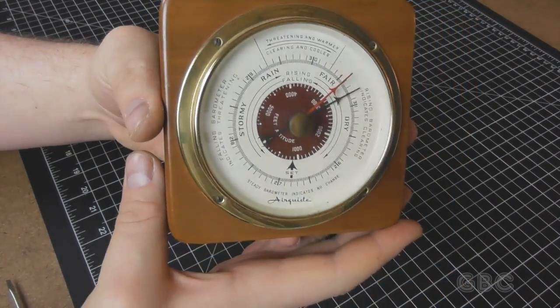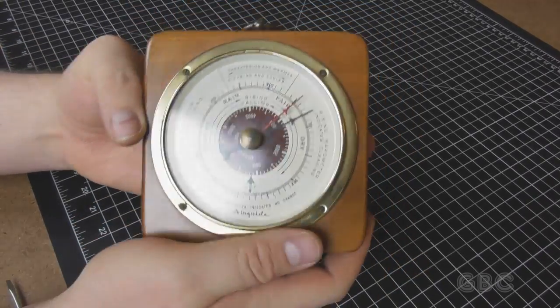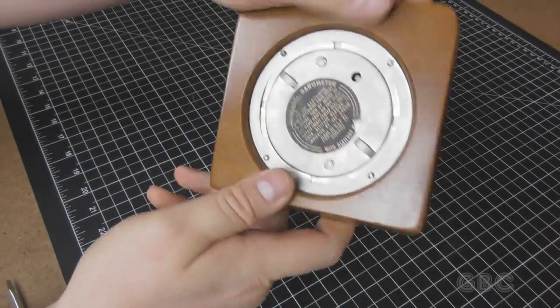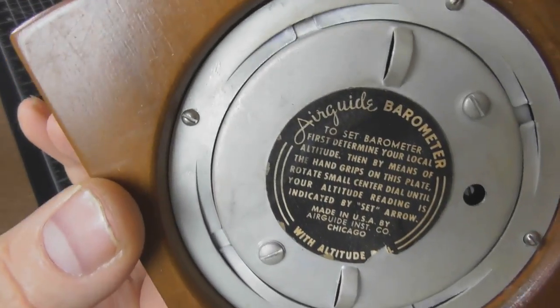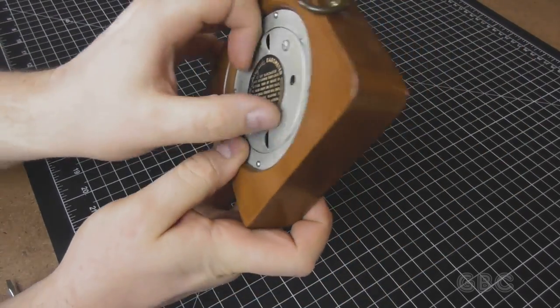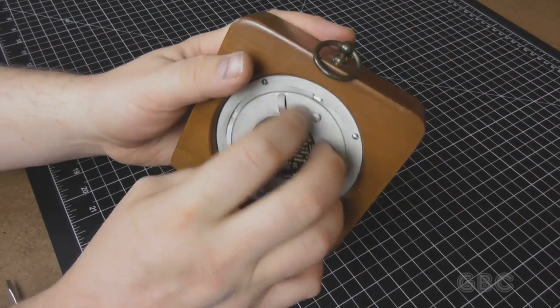This one displays in inches of mercury. To set this up, you'd start by setting your altitude. Here's some instructions on the back. To set the altitude, you turn this dial.